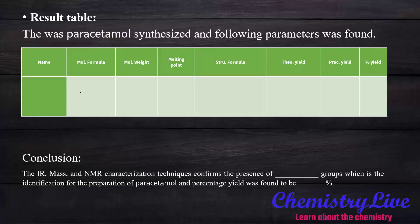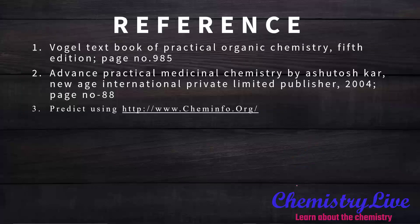In the result table you have to write the name, formula, molecular weight, melting point and all the details. In the conclusion, you write about the presence of NHCO-CH3 and OH groups, which confirm the preparation of paracetamol through the calculation technique. The percentage yield obtained through calculation should be included here. References are also provided.